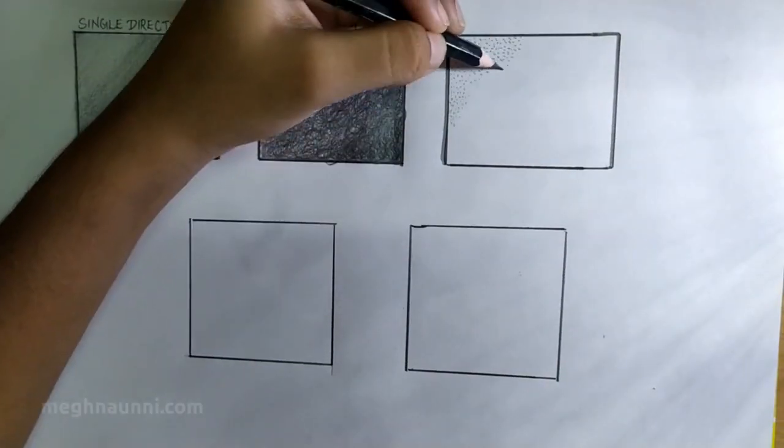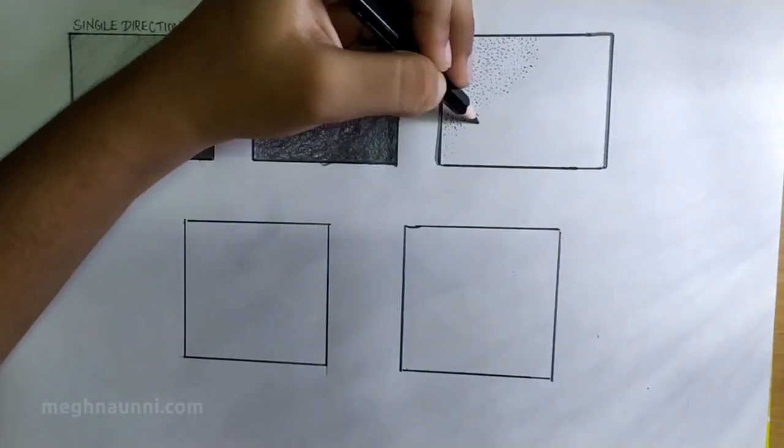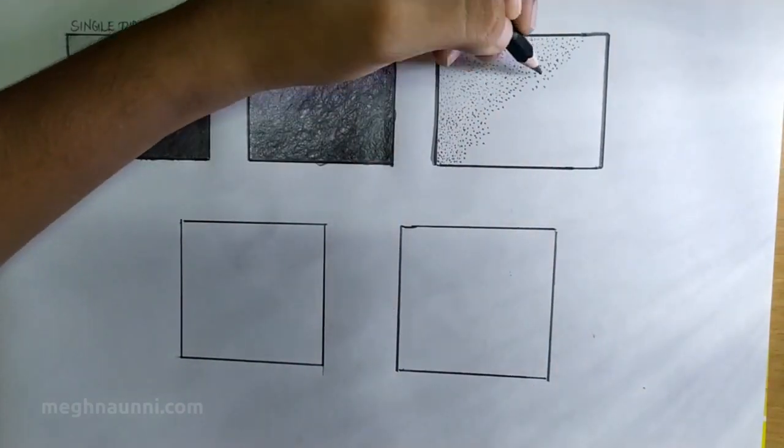Take your pencil and place dots all over the area. Put the dots randomly here and there with a lot of gaps in the first layer.